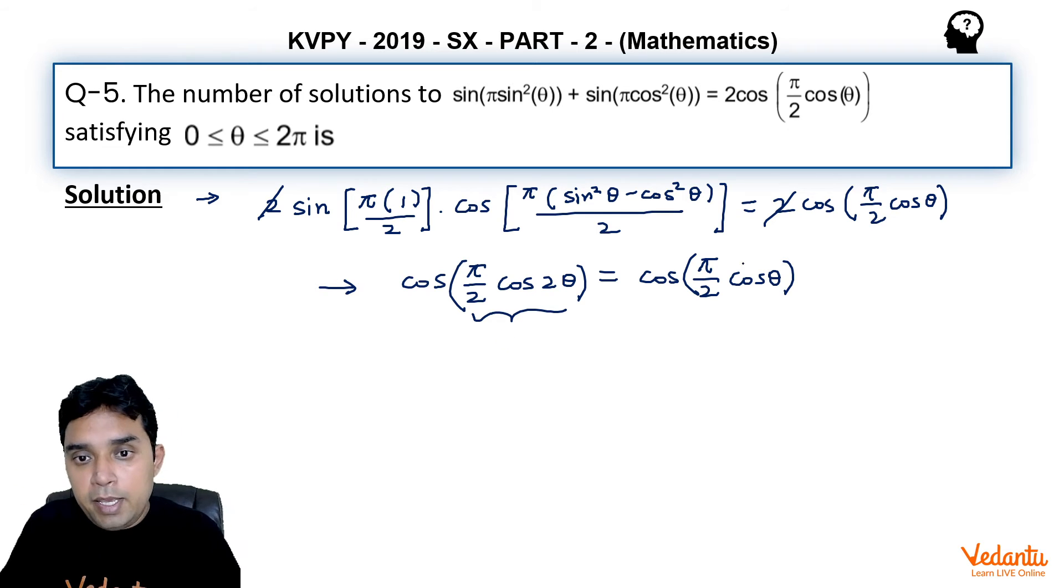Similarly this will be from -π/2 to π/2, as cos θ or cos 2θ ranges from -1 to 1 only.